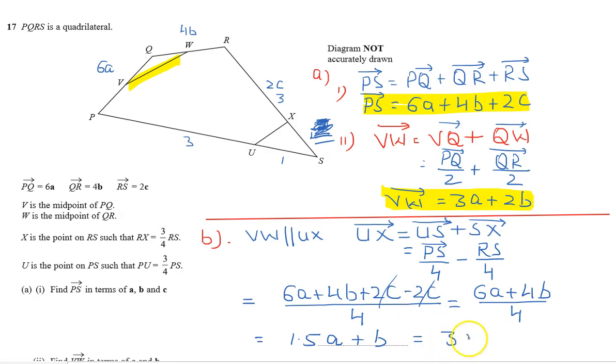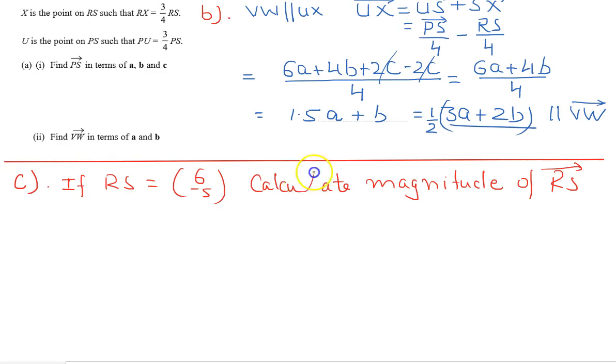That is 3A plus 2B, so we can see that it shows it is parallel to VW.